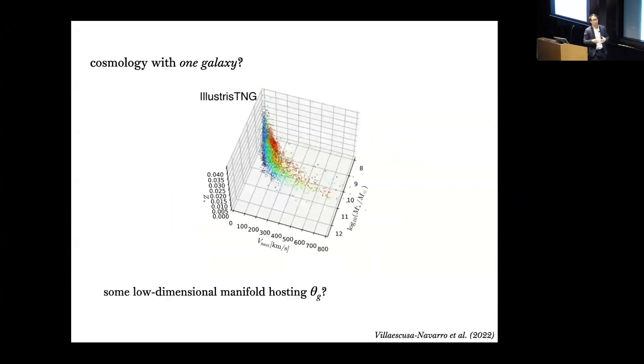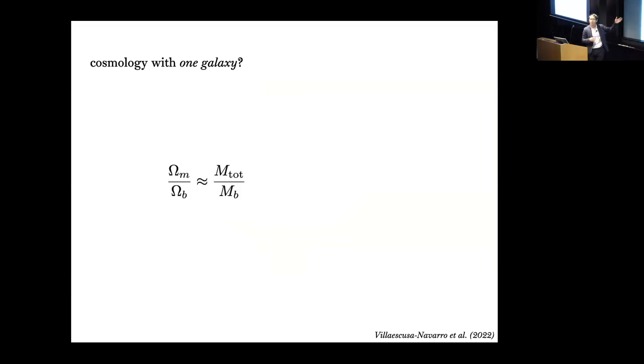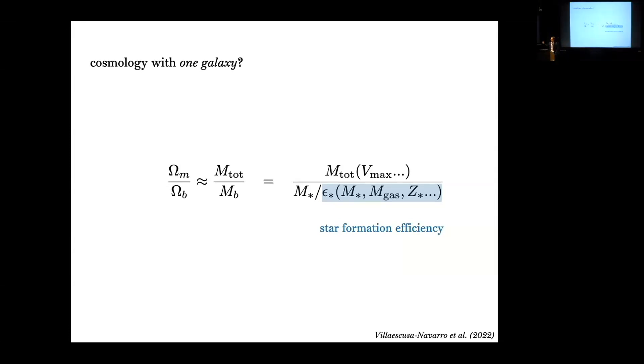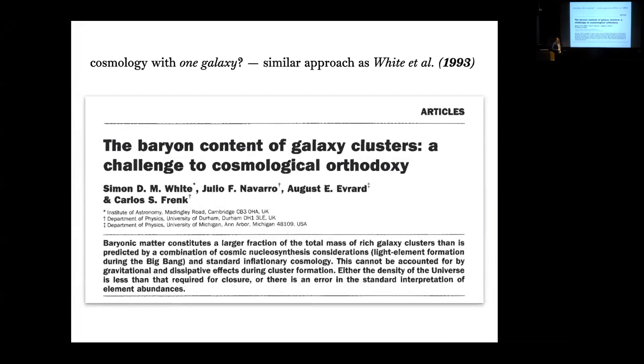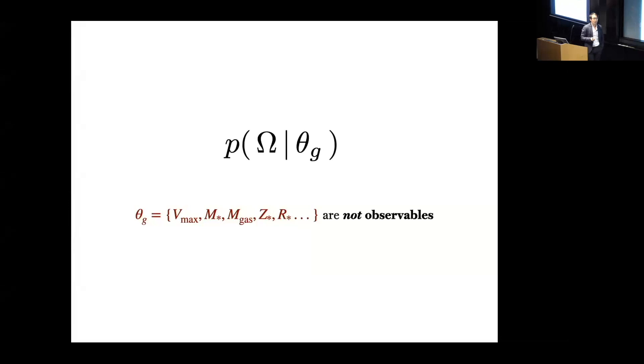They provide some interpretation of this result. One is that these galaxy properties lie on some low dimensional manifold that you can exploit in order to get to the cosmological information. Another interpretation is that you're ultimately measuring some ratio between omega matter and omega baryon, approximating as the total mass over the baryonic mass. You're getting the total mass from galaxy properties like circular velocity and the baryon mass from the stellar mass divided by some star formation efficiency. Like many ideas, this is not anything new. This is almost 30 years old. A very similar approach was used way back in the day with galaxy clusters.